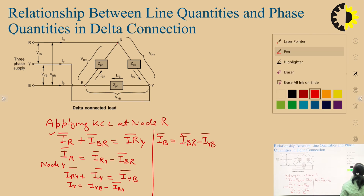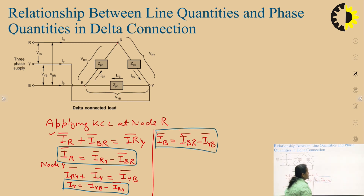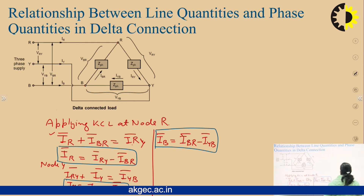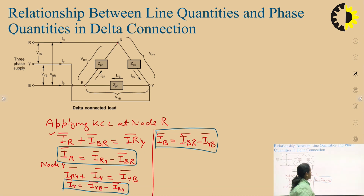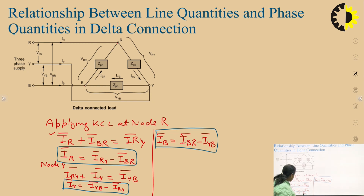We will draw a phasor diagram for these three equations. First we draw the phase currents IRY, IYB, and IBR, which are displaced from each other by 120 degrees. To find IR = IRY − IBR, we draw IRY on the phasor diagram and then draw minus IBR by reversing the direction of IBR. Drawing parallel lines gives the resultant IR, and the angle between IRY and minus IBR is 60 degrees.